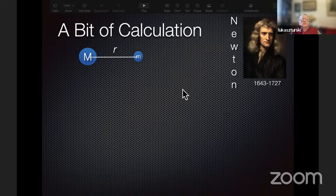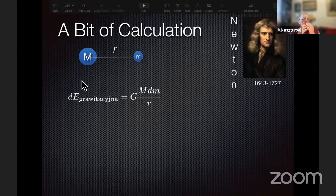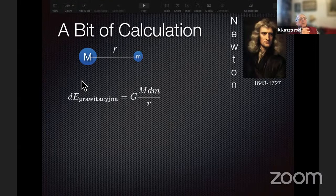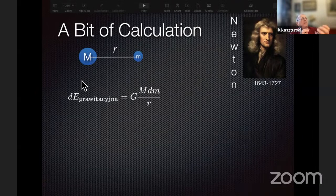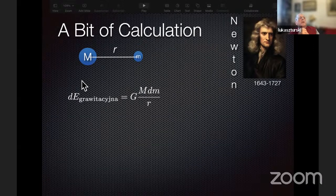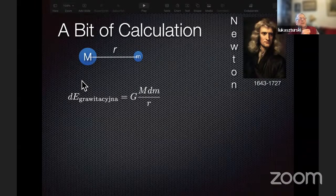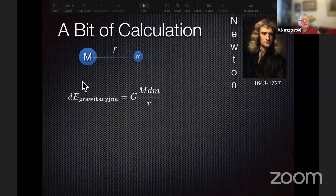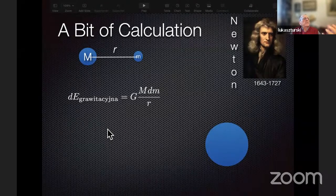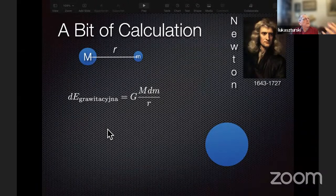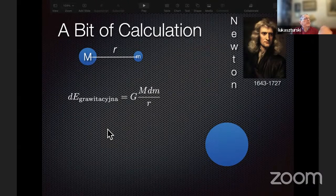There will be a bit of calculation, first and only calculation in this series of lectures. Let me refresh your memory. If I have two masses which interact gravitationally, then as Mr. Newton told us in his work, the energy, gravitation energy between the mass capital M and the little mass dm, is just gravitation constant G times M dm divided by R.